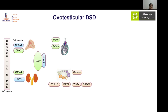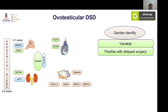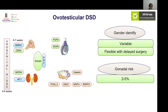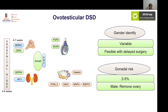In ovotesticular DSDs, gender identity is variable and flexible; surgery should be delayed until we can talk with the child and understand their perspective. The risk of gonadal malignancy is around 2 to 5 percent. If reared as male, the ovarian component of the ovotesticular tissue can be removed and the remaining testicular tissue monitored frequently for malignancy. If reared as female, the ovotestes can be removed and hormones supplemented at puberty.